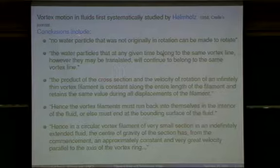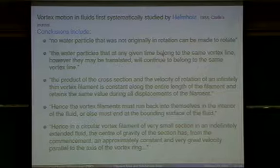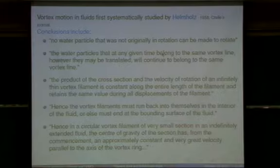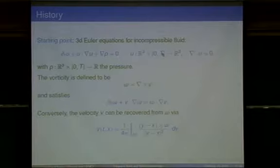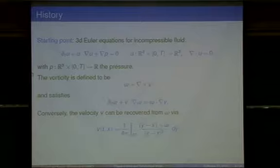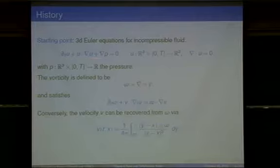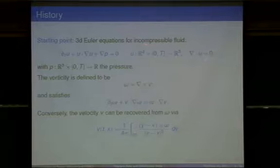Vortex motions in fluids were first systematically studied by Helmholtz. His first paper was published in 1858 in Crelle's journal. The starting point is Euler's equations for incompressible fluid, derived by Euler in the 18th century. One looks for a solution U describing the local velocity of an incompressible fluid. U is divergence-free, expressing the incompressibility constraint, and satisfies a PDE where P is the pressure. The vorticity is defined as the curl of U, and is supposed to characterize the infinitesimal rotation of the fluid.